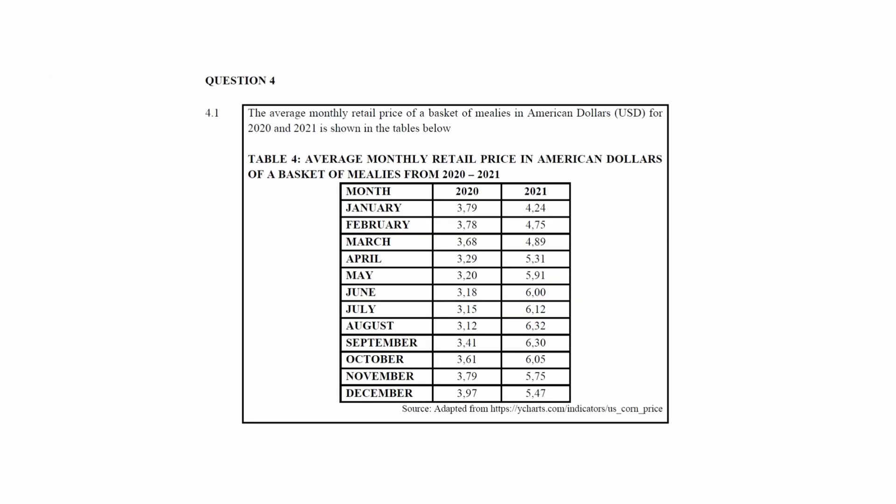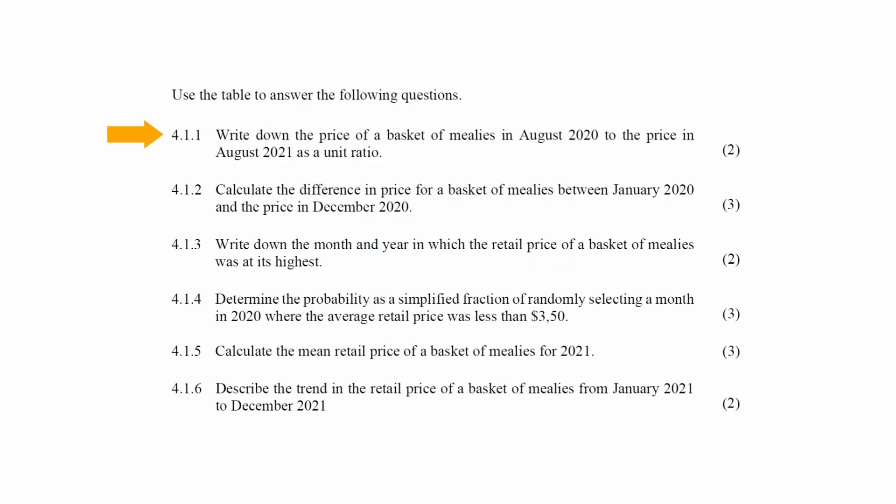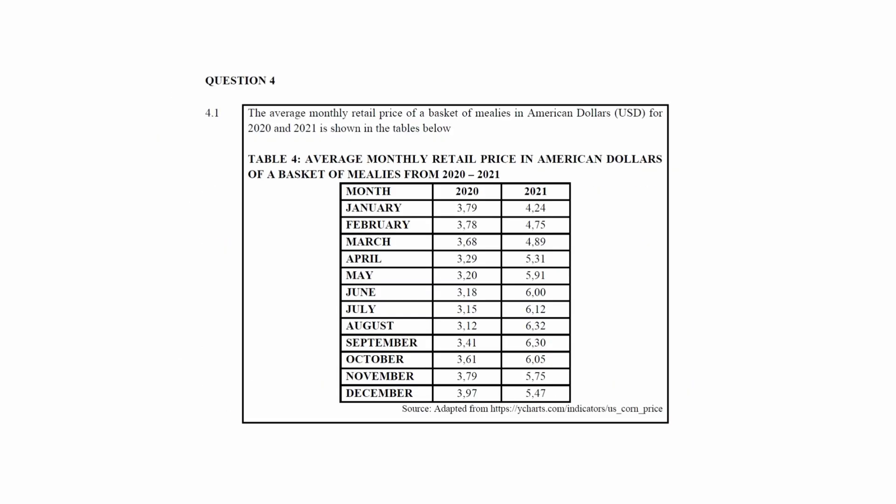You are given a context where the average monthly retail price of a basket of mealies in American dollars for 2020 and 2021 are shown in the table. In question 4.1.1, you are instructed to write down the price of a basket of mealies in August 2020 to the price in August 2021 as a unit ratio.